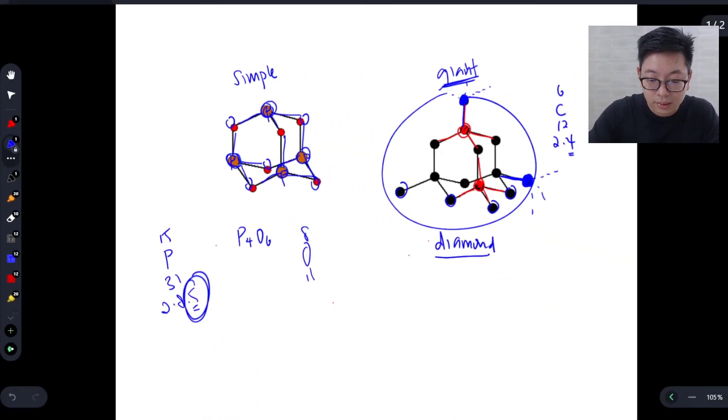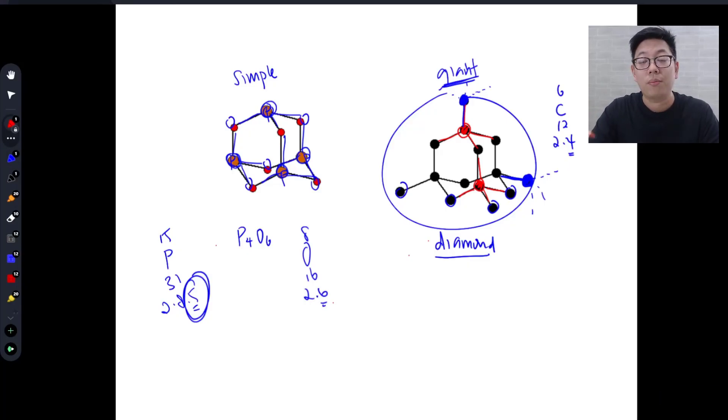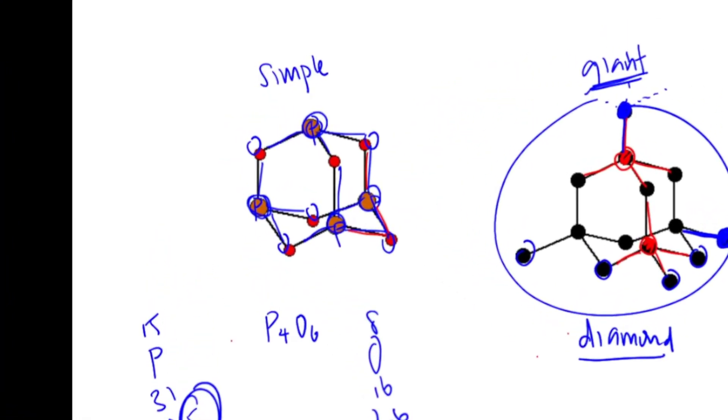Likewise, oxygen is 8 16, 2.6. There are six valence electrons. I'm going to change the red color, okay? So each oxygen must gain two electrons. It will form two bonds. So if you look at all the red ones, there are actually two lines sticking out of all of them.